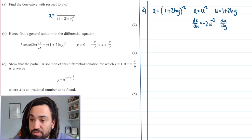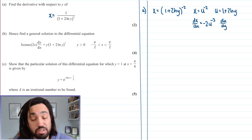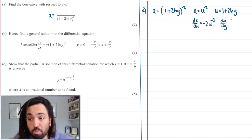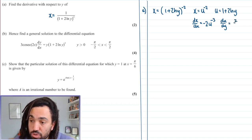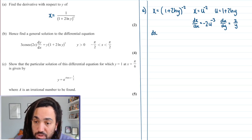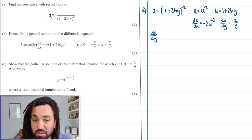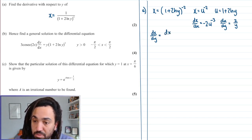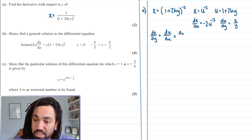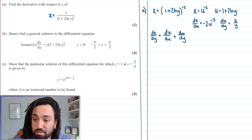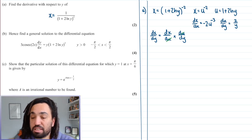And next we're going to want to do du by dy, so differentiating this. 1 differentiates to 0, ln Y differentiates to 1 over Y, so 2 ln Y differentiates to 2 over Y. So now with the chain rule, what we want is dx by dy, because we want to differentiate this function X with respect to Y. To do that, we just multiply these two together, because dx by dy is dx by du times du by dy.